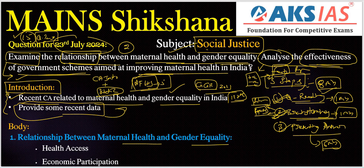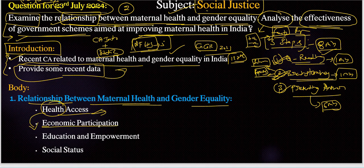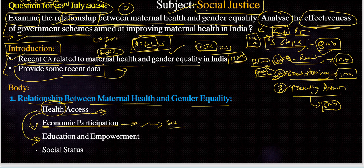In the body part, we address the relationship between maternal health and gender equality. First is health access — women with access to comprehensive maternal healthcare are more likely to survive childbirth, leading to healthier families and communities. This leads to economic participation, as healthy mothers are better able to participate in the workforce, contributing to economic growth and declining poverty.